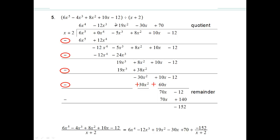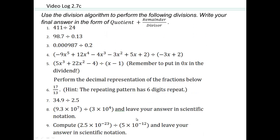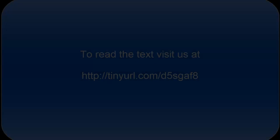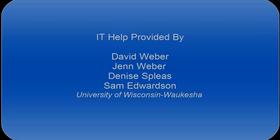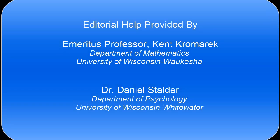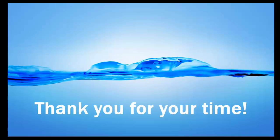That minus sign makes it plus — those two give 0. 10x plus 60x gives 70x. The negative 12 can be pulled down. Now, 70 times x gives 70x, plus 70 times 2 gives 140. That minus sign distributes across, so those two give negative 152. Nothing times x gives a number because you always get something times x. So this is your quotient and this is your remainder — that's the final answer. Just remember to switch the signs when doing the subtraction so you don't make any mistakes. Try those on your own.